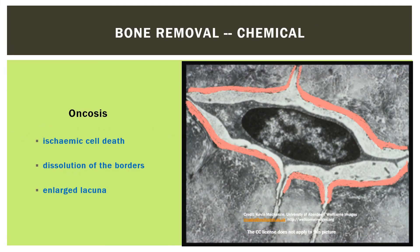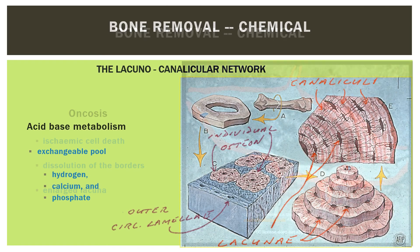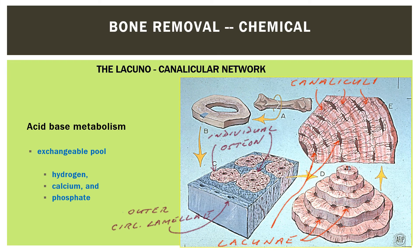Oncosis is ischemic cell death, which is accompanied by chemical dissolution of the surrounding bone surface, enlarging the lacuna. There is also ongoing mineral exchange from free surfaces of bone around each cell, cellular processes, vessel canals, trabecular surfaces, and the endosteum. These surfaces combined make up an area of more than 1,200 square meters, providing a pool of mineral and hydrogen ions acting as a 72-hour resource for acid-base metabolism — a give-and-take of ions of calcium, phosphate, and hydrogen.